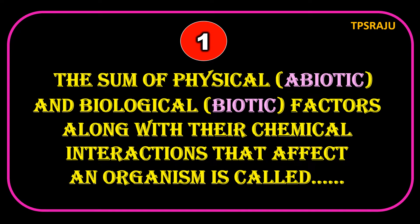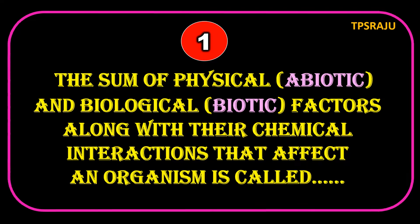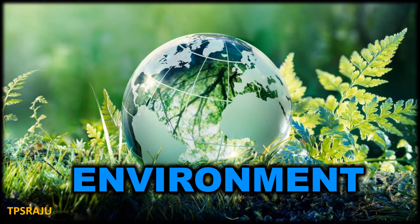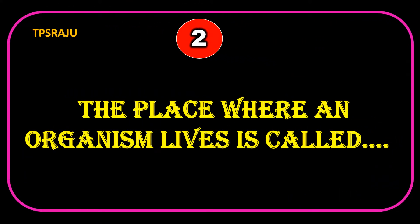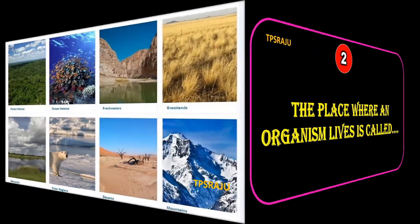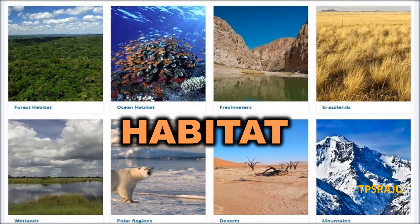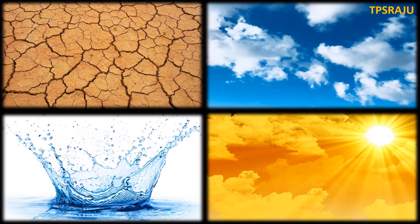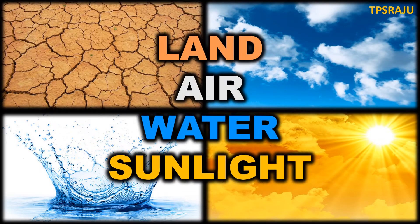The sum of physical and biological factors along with their chemical interactions that affect an organism is called environment. The place where an organism lives is called habitat. Examples for abiotic factors: land, air, water, sunlight, etc.